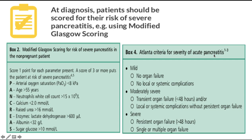The Atlanta criteria classify severity of acute pancreatitis as mild, moderately severe, or severe. Mild: no organ failure, no local or systemic complications. Moderately severe: transient organ failure less than 48 hours, or local or systemic complications without persistent organ failure. Severe: persistent organ failure more than 48 hours, with single or multiple organ failure.